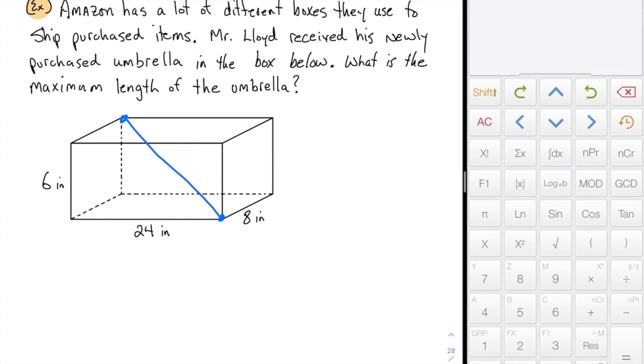In this question, it's a box, right? It's a rectangular solid. So all of the corners are 90-degree corners.